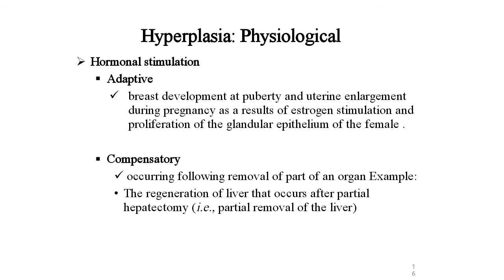Hyperplasia physiological — hormone stimulation, adaptive or compensatory. Adaptive: breast development at puberty and uterine enlargement during pregnancy as a result of estrogen stimulation and proliferation of the glandular epithelium of the female. Compensatory: occurring following removal of part of an organ — for example, regeneration of the liver that occurs after partial hepatectomy (partial removal of the liver).